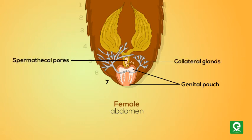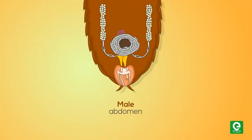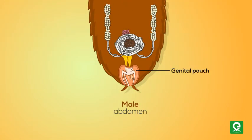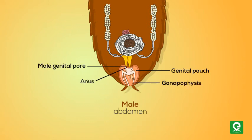In males, the genital pouch lies at the hind end of the abdomen. The genital pouch contains the anus, male genital pore, and gonapophysis.